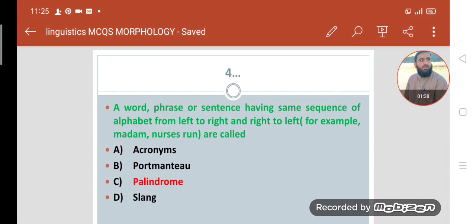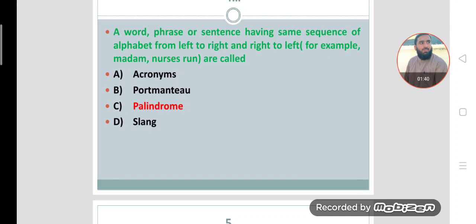Number four: A phrase or a sentence having same sequence of alphabet from left to right and right to left, for example madam, nurses run, are called palindrome. Option C is the correct option.